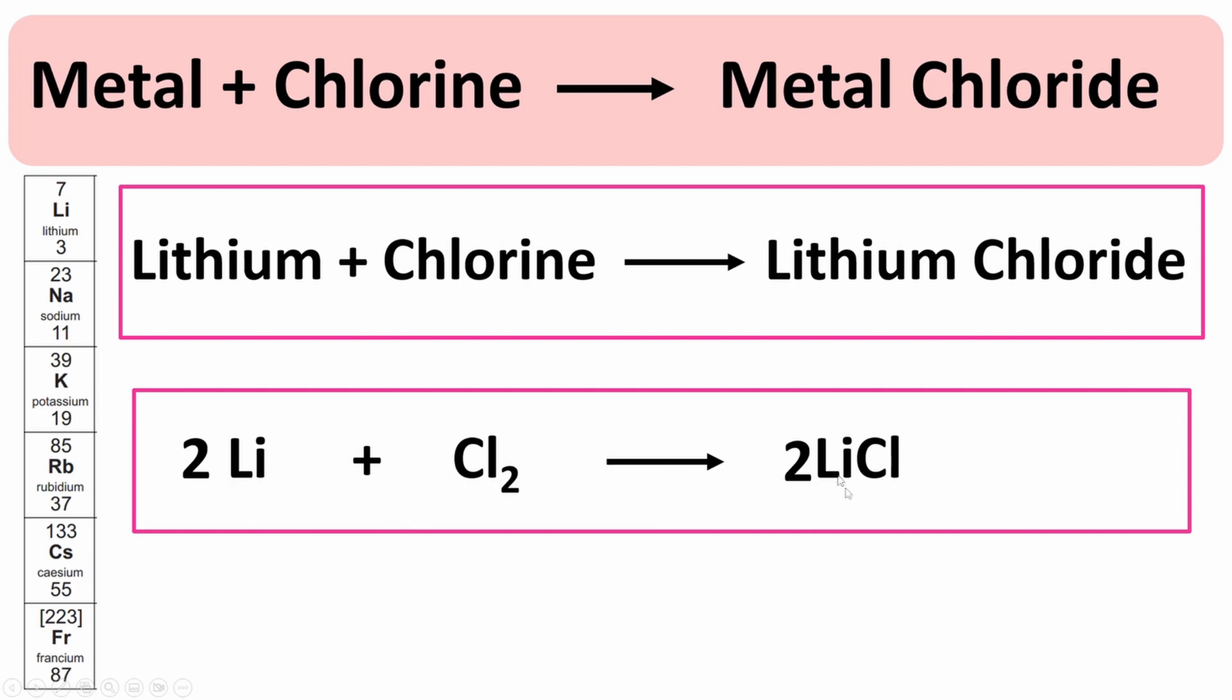We also need to include state symbols. Lithium is a metal, so it's a solid. Chlorine is a gas, so we put a G there. And lithium chloride is a salt, so it's solid at room temperature, so we put an S in brackets there.